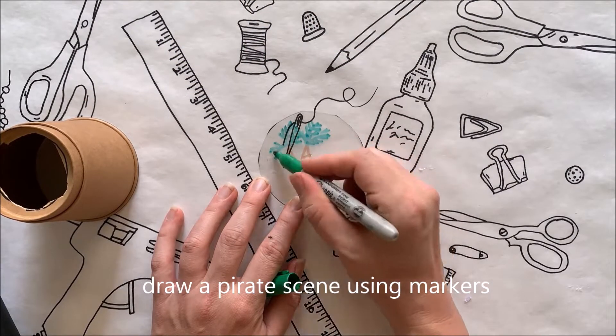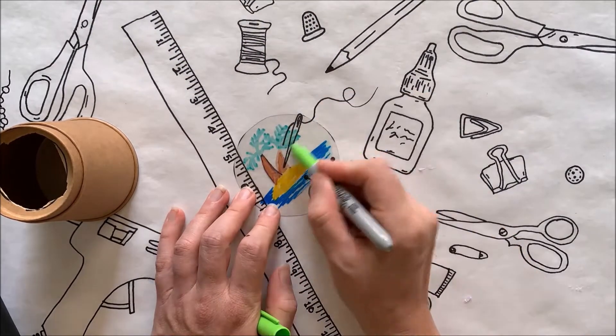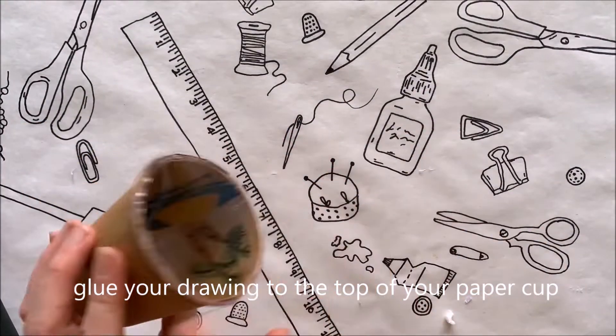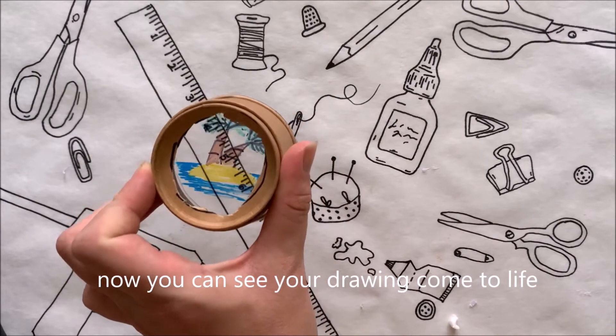Take one of the clear plastic circles and draw a pirate scene using markers, or you can use the samples provided to trace your image. Glue your drawing to the top of the paper cup and now you can see your drawing come to life.